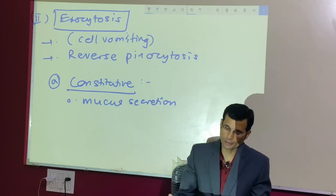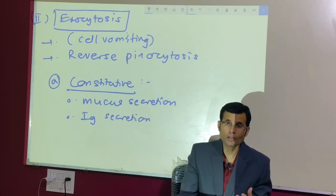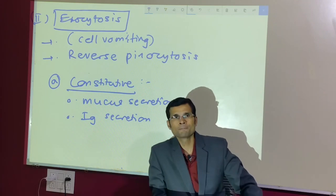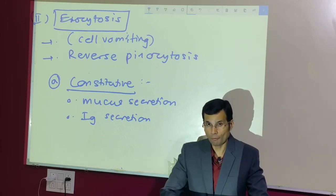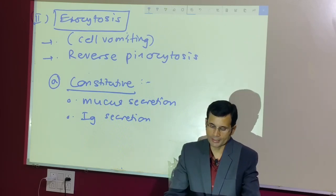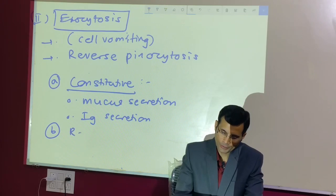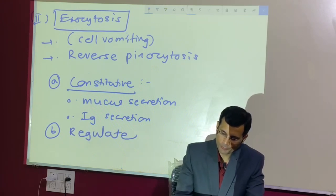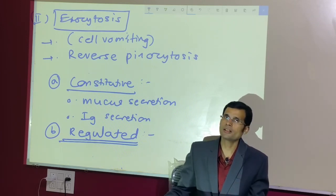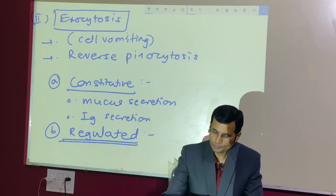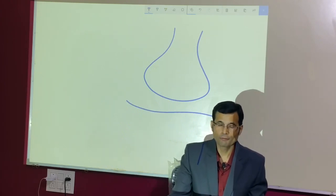Immunoglobulin secretion is another example of constitutive exocytosis. B lymphocytes form antibodies and differentiate into plasma cells, which continuously secrete antibodies — this is constitutive exocytosis. The second type of exocytosis is regulated exocytosis, also called regulated membrane transport. All the commonly known types of secretion belong to this category.